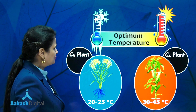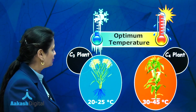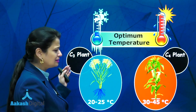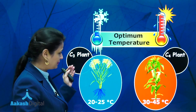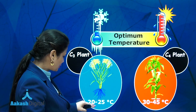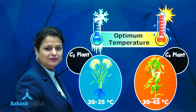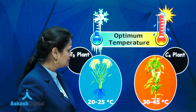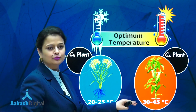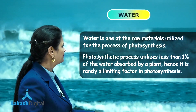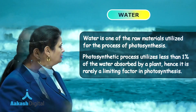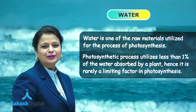Tropical plants have a higher temperature optimum than plants adapted to temperate climates. Here we need to talk about optimum temperature for C3 and C4 plants. For C3 plants it is 20 to 25 degrees Celsius, and for C4 plants it is 30 to 45 degrees Celsius.